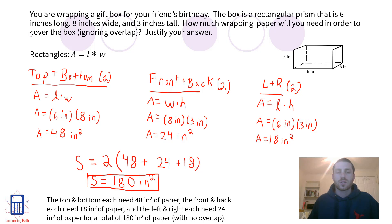...the front and back each need 18 square inches of paper, and the left and right each need 24 square inches of paper for a total of 180 square inches of wrapping paper with no overlap.